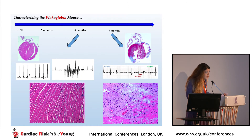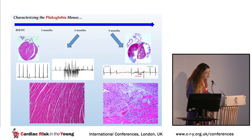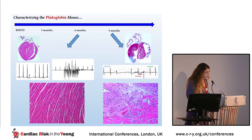A little bit later in life, by six months of age, it starts showing arrhythmias — premature ventricular contractions and runs of ventricular tachycardia — and it does start showing lesions of fibrosis with inflammatory infiltrates. At nine months of age, the arrhythmia burden is much higher, the lesions are much more widespread, the heart is getting bigger and the walls are getting much thinner, because now it is in heart failure.